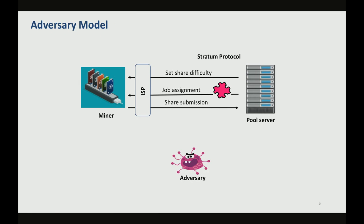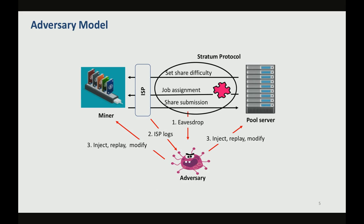We evaluated three types of attacks in increasing level of sophistication of our adversary. The first attack is a normal eavesdropper attack, where the adversary is able to observe all the information inside each of these packets. The next level is an attacker that only requires the metadata of the packets — perhaps the adversary was able to get a hold of ISP logs. And finally, the most sophisticated attacker is able to take advantage of injecting, replaying, and modifying packets.